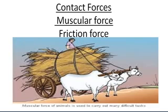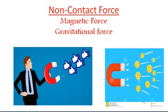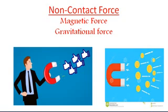Now we come to non-contact force. The two things are not in contact, but the force is being applied. The first example is magnetic force — when we put a powerful magnet near nails quite far away, the magnet pulls the nails. That is non-contact force. So too with gravitational force — the force applied by the earth, gravity pulls things down. All things fall down because there is a pull by the earth. Magnetic force and gravitational force are examples of non-contact force.